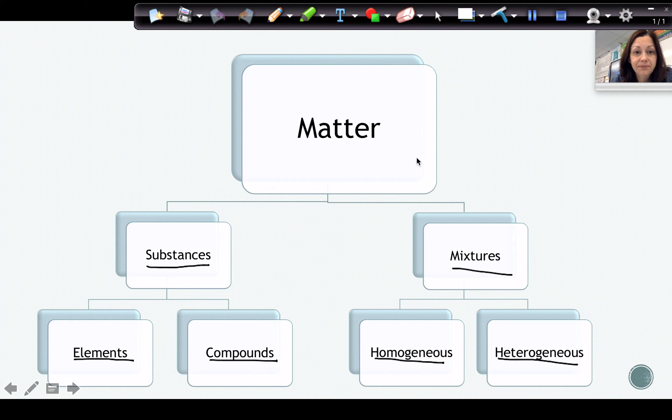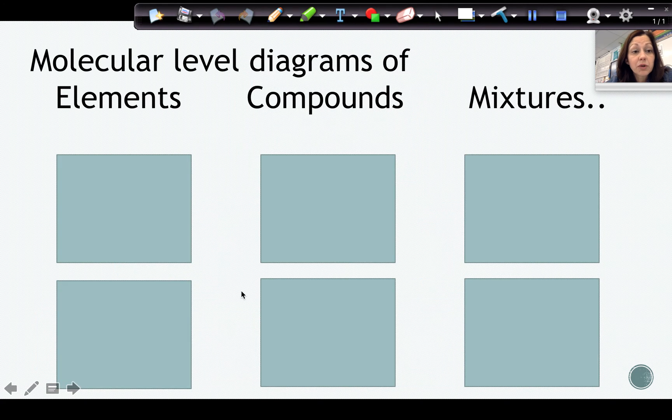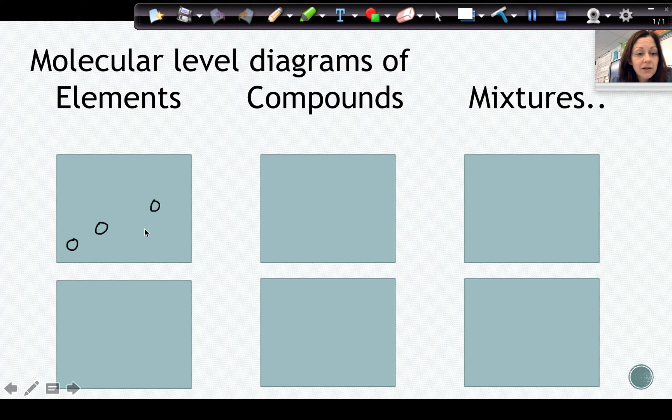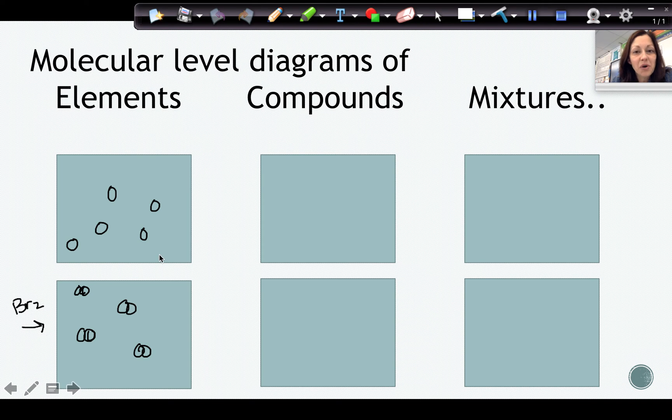Moving forward, if we wanted to do molecular level diagrams of elements, compounds, and mixtures, remember that elements can either be monatomic or diatomic. For a diatomic element, we're going to see groups of two. This would be like our Brinkelhoff's, for example: Br2, I2, N2, Cl2, H2, O2, or F2. Whereas a monatomic element might be something like helium. All of our group 18 elements give us monatomic gases.